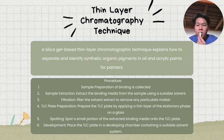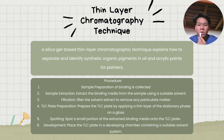Thin Layer Chromatography, or TLC, is a useful technique in art preservation for analyzing and identifying the components of various materials such as pigments, dyes, and binders. It can be used to determine the presence of specific compounds in an object. The first procedure is sample preparation of binding media. Second is sample extraction — the binding media is extracted from the sample using suitable solvents such as ethanol, methanol, or acetone. Third is filtration — the solvent extract is filtered to remove any particulate matter.